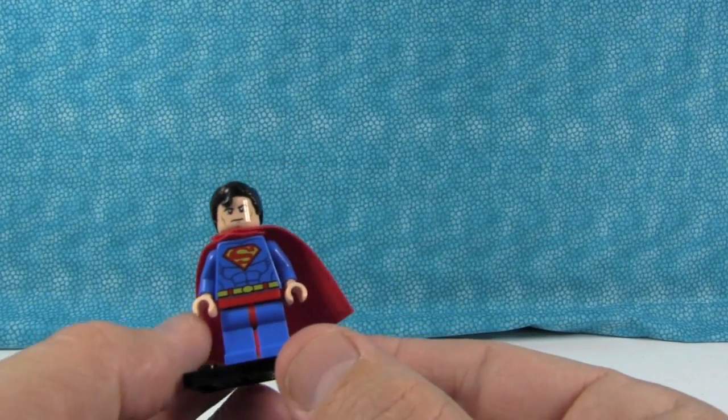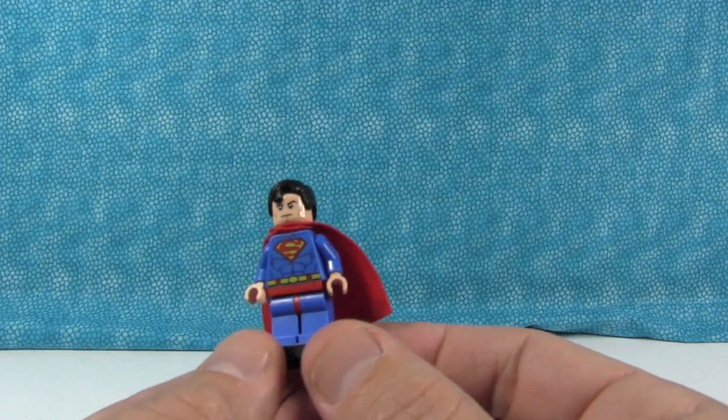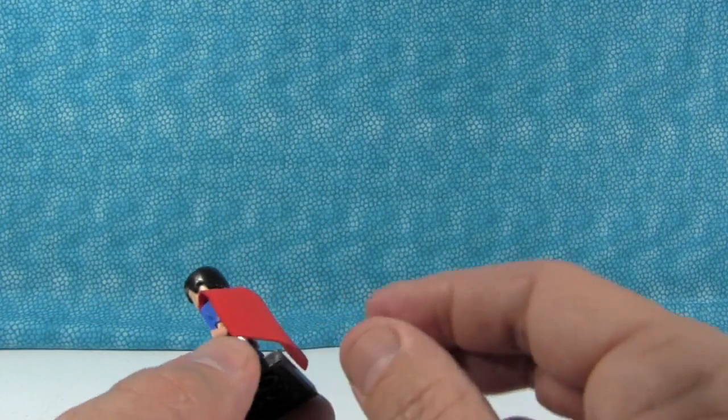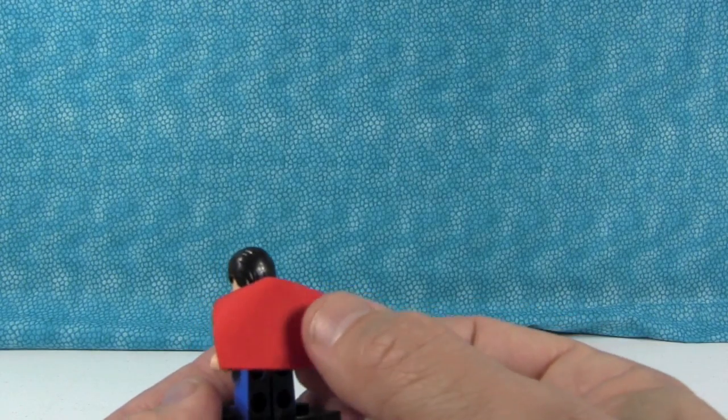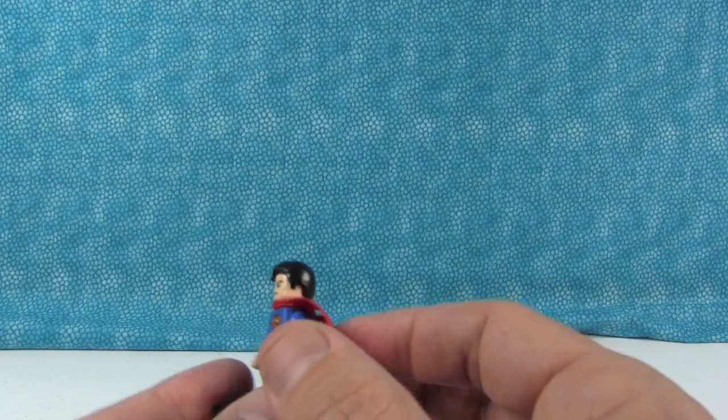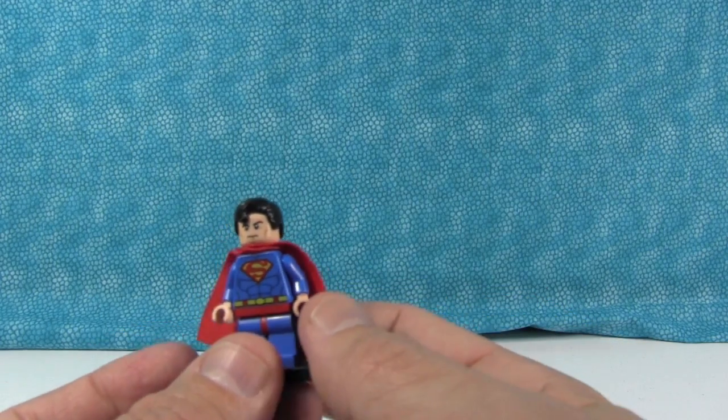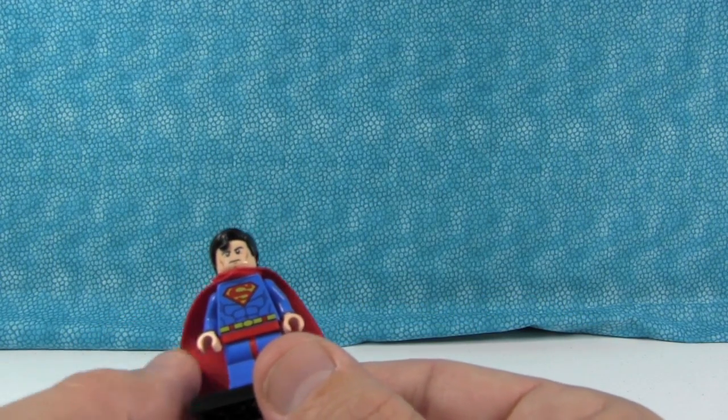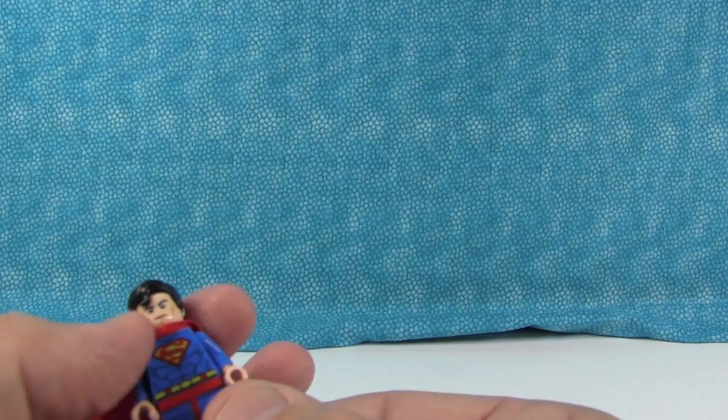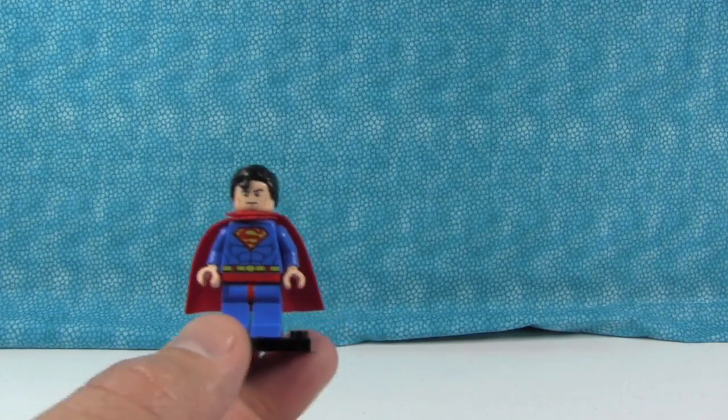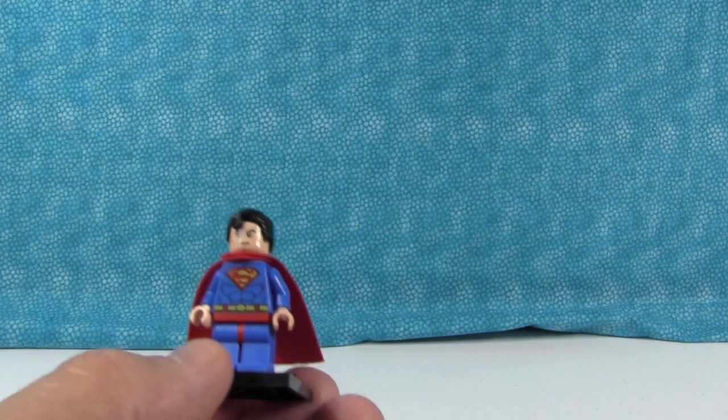So here's Superman. He is in his classic Superman uniform, the bright blue and red. First thing I noticed about this figure is the cape is a little bit different than normal minifigure capes. It's a softer cloth, so it drapes a little bit better, I think. It feels a little bit nicer. So I kind of like that. It's not as stiff. I don't know that it fits around his neck as well, but that's what it is.